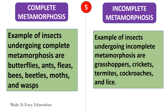Examples of insects undergoing complete metamorphosis are butterflies, ants, fleas, bees, beetles, moths, and wasps. Examples of insects undergoing incomplete metamorphosis are grasshoppers, crickets, termites, cockroaches, and lice.